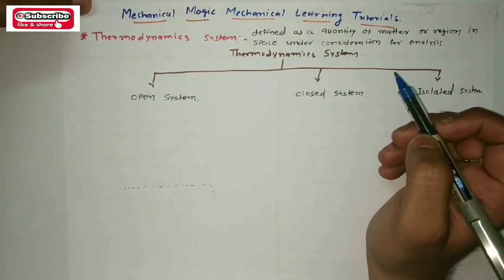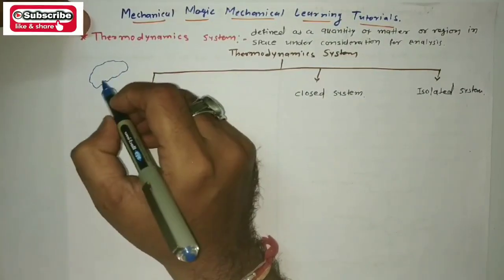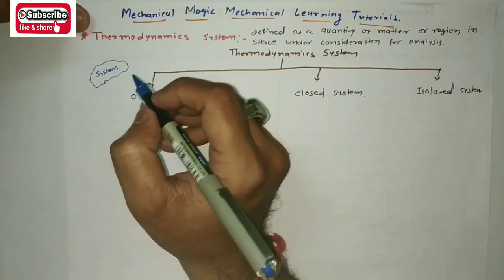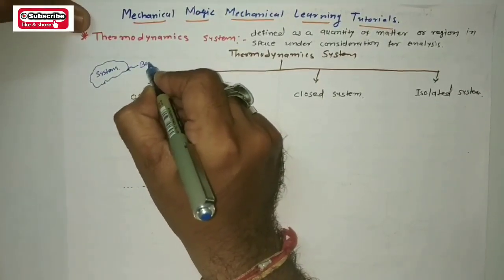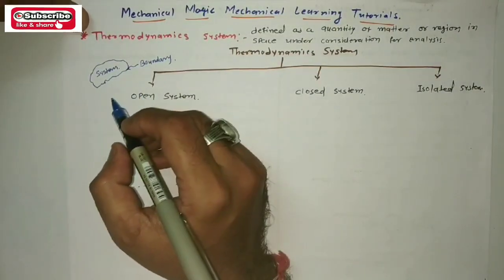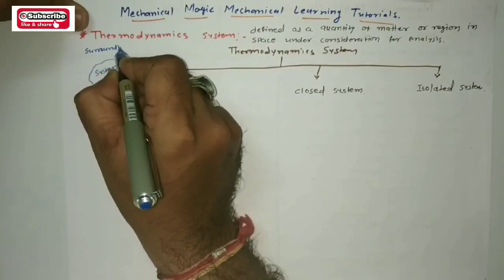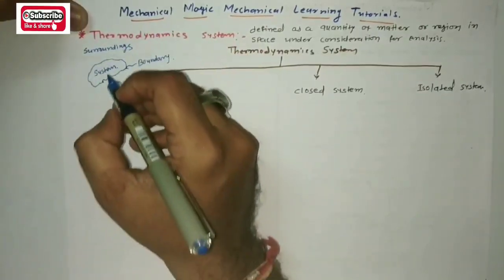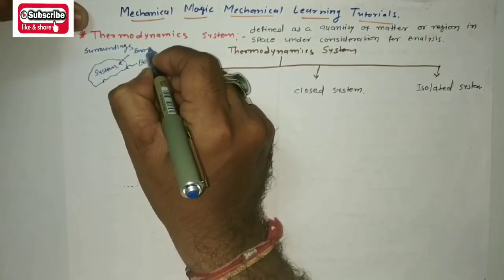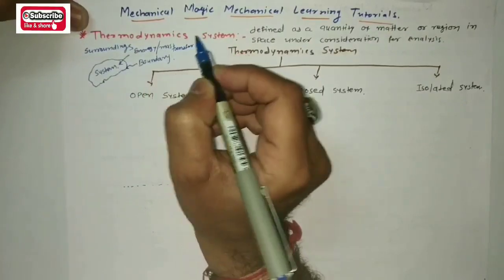A thermodynamic system will have a boundary, and that boundary separates the system from the surroundings. So outside that will be the surroundings. Between the system and surroundings there will be some amount of energy or mass transfer.